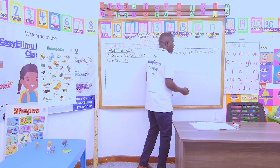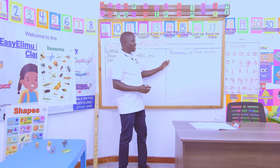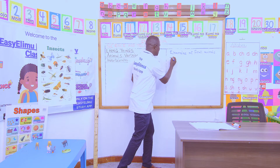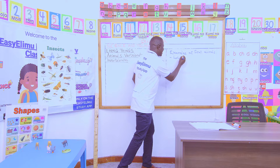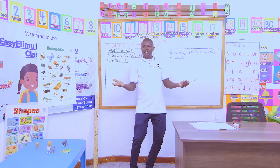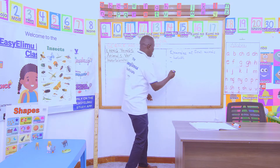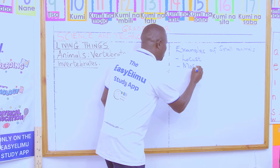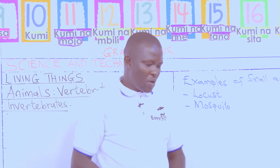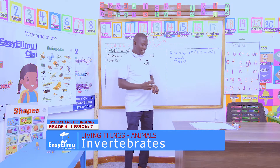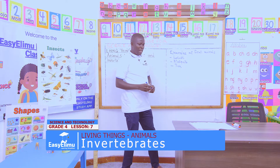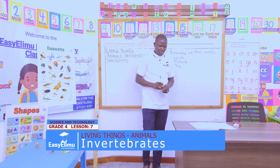Yesterday we said there are big animals, so it means there are also small animals. Victor says an example is locust — correct, locust is an example of a small animal. Victoria says mosquito — mosquito is another example. John has said a tick — tick is also a small animal.